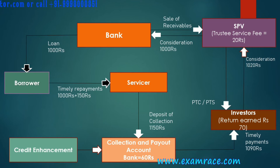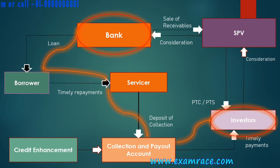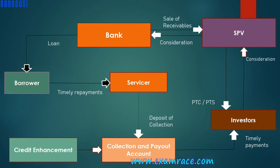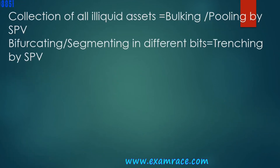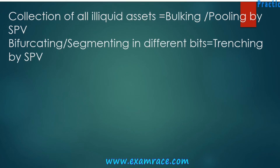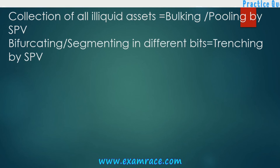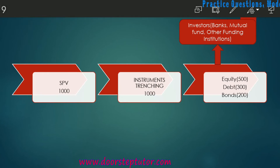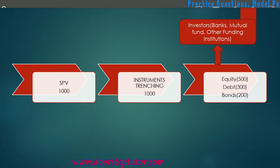Ultimately it is the bank that provides the return but the middleman is the SPV, which uses the amount from the collection and payout account. Investors get their secure return. The SPV is a trust managed by a trustee, which is why it is named a special purpose vehicle. The instruments are bifurcated into equity, debt, and bonds, and are purchased by investors such as banks, mutual funds, and other funding institutions — not common retail investors.